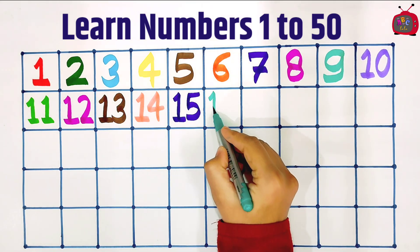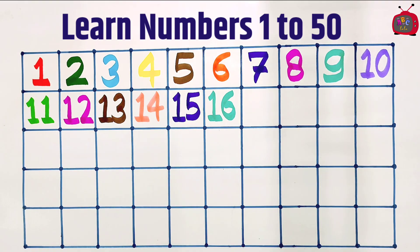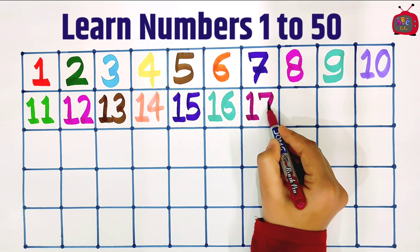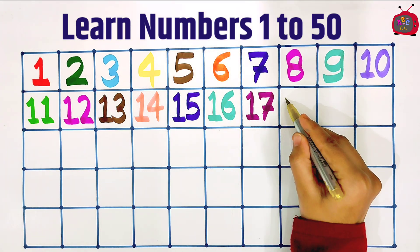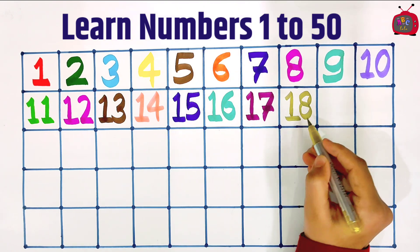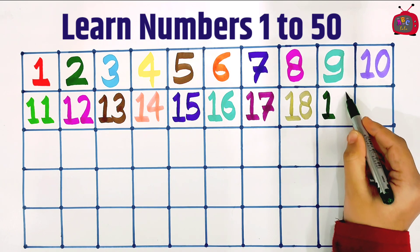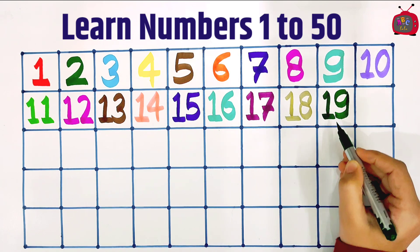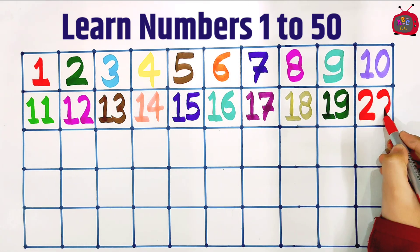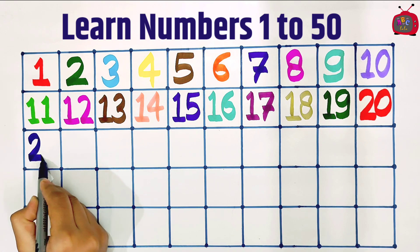One, six: sixteen. One, seven: seventeen. One, eight: eighteen. One, nine: nineteen. Two, zero: twenty.